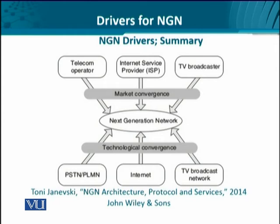Looking at this diagram, we see that evolution took place two-fold. First, there was technology evolution, where different networks such as the LAN, mobile network, the switched telephone network, and the broadcasting network all started to move to common technology platforms. On the market side, these networks again started providing services from each other, diversifying their own services and offering internet-based services of other networks. The natural conclusion was that next-generation networks had to evolve.